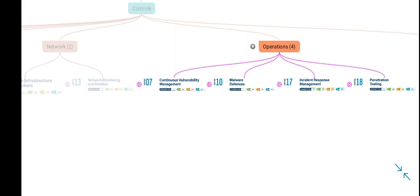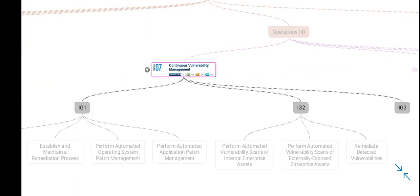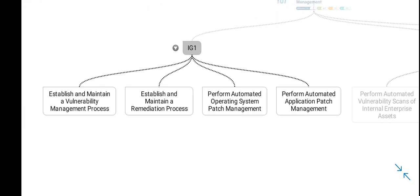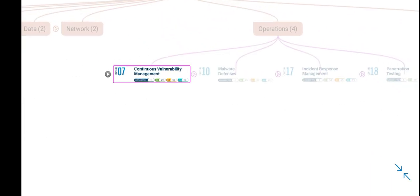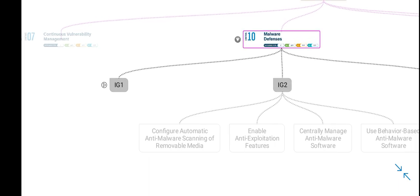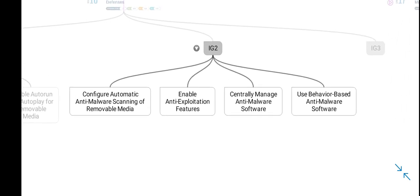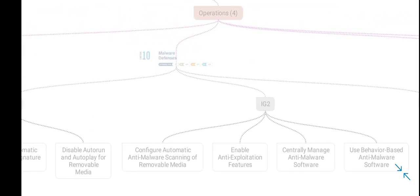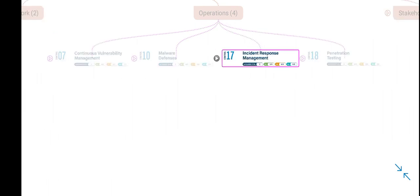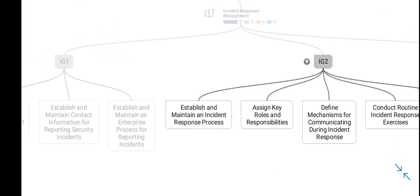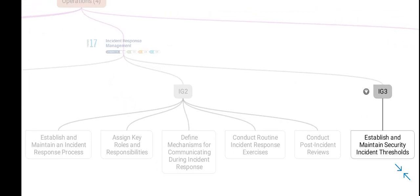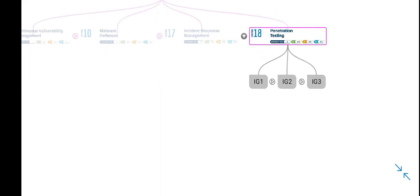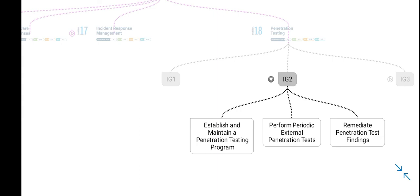With regards to security operations — vulnerability management: for smaller organizations these controls apply, for mid-size organizations these plus additional controls, and larger and mid-size organizations have to implement the same controls. For malware defenses: IG1 has 3 controls, and IG2 has 3 plus additional controls. For incident response: smaller organizations have these controls, mid-size organizations have these controls plus one additional, and for penetration testing nothing is required for smaller organizations — these safeguards apply for mid-size and larger organizations.